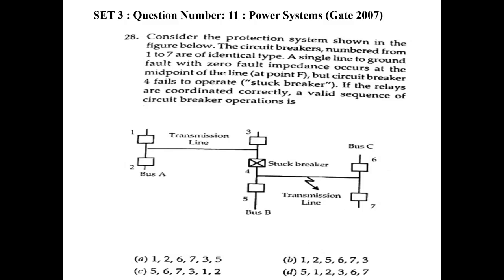The purpose of isolating the breaker immediately is to reduce the failure rate. Already there is a fault in the system, and if the fault is fed with high current, it will damage the total system further and affect the stability of the system. Choices A and B are wrong because they mention 1 and 2. Sequence C is wrong. Breakers 5, 6, and 7 must trip immediately, after which we can trip the other breaker. So sequence C is the right answer.